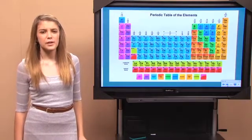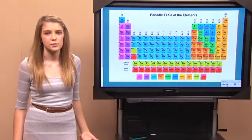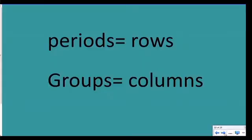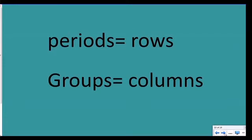The periodic table is kind of mapped in periods and groups. The periods are the rows, and the groups are the columns. Let's write that down before you forget it.